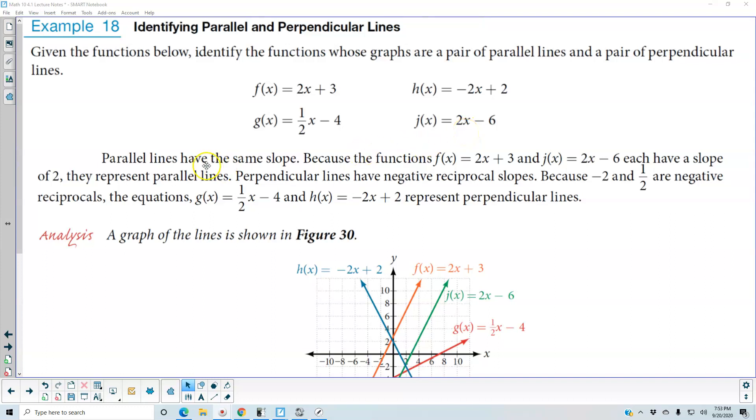Parallel lines have the same slope. Because the functions f(x) and j(x) each have a slope of 2, they represent parallel lines.